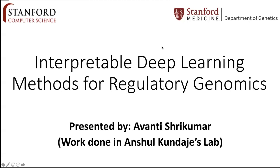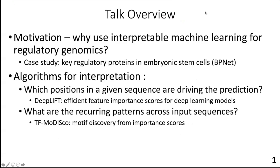Assuming most people have a general genomics background, here is an overview of what I'm going to talk about. First, I'll discuss why we want to use interpretable machine learning for regulatory genomics, which is what the Kundaje lab focuses on. I'll talk about the BPNet paper, recently published in Nature Genetics, where Giga is the first author. I'll interleave a case study with discussion of algorithms, focusing mostly on DeepLIFT and TF-MoDISco.